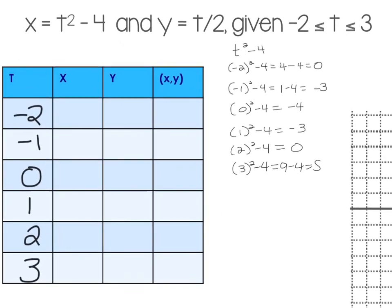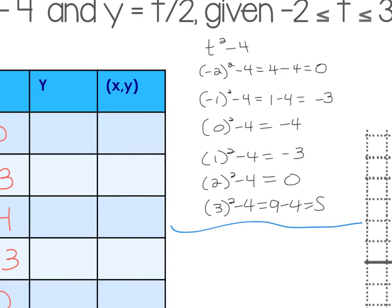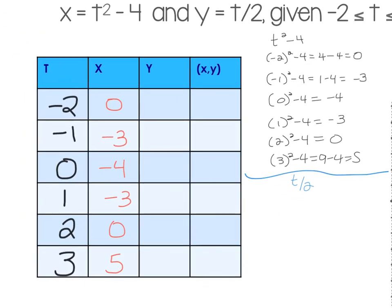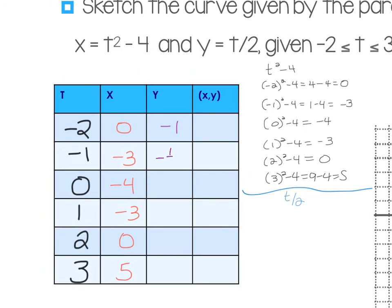So my X values are 0, negative 3, negative 4, negative 3, 0, 5. Now I repeat the process for Y equals T over 2: negative 2 over 2 is negative 1; negative 1 over 2 is negative one half; 0 over 2 is 0; 1 over 2 is one half; 2 over 2 is 1; 3 over 2 is 1 and one half. If it requires work, be careful not to make a mistake on something silly.